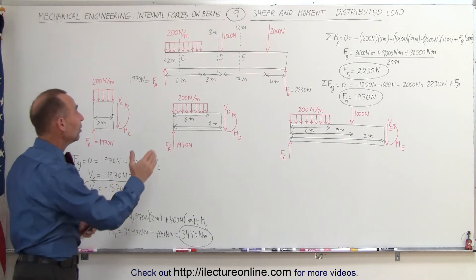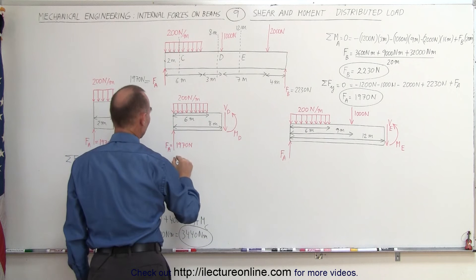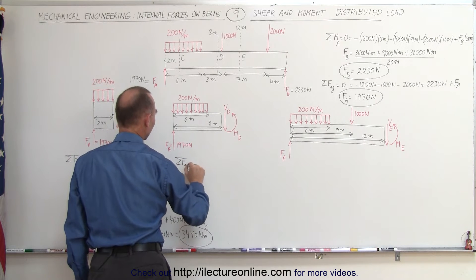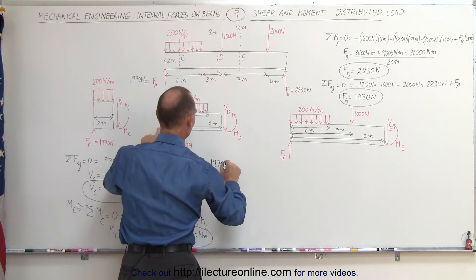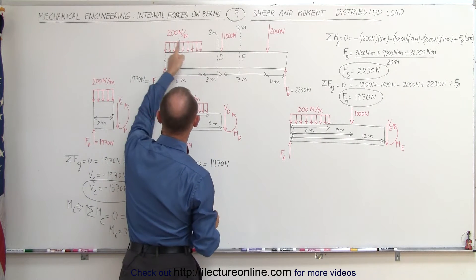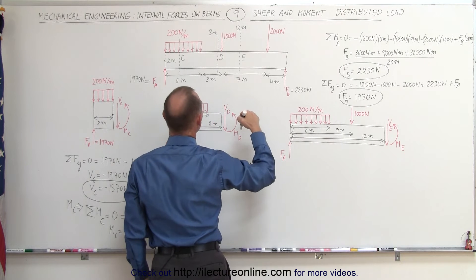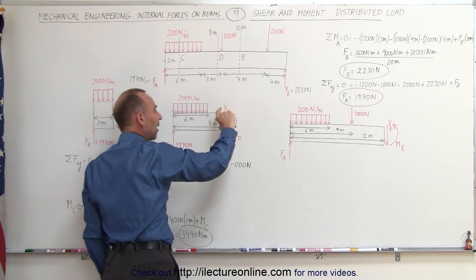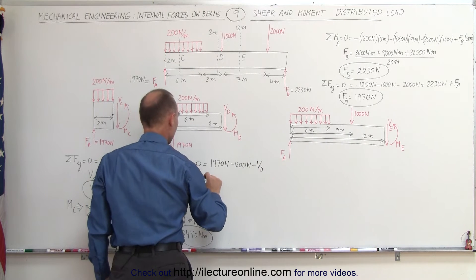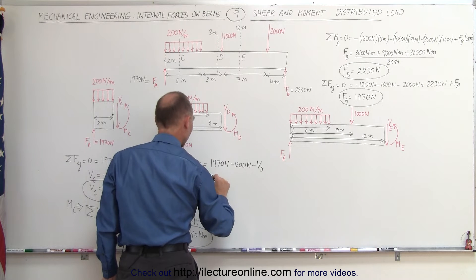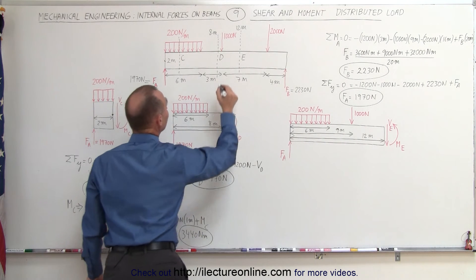Now let's find the shear force and moment for the section out to D, which includes the entire distributed load. Summing forces in the y direction: we have force at A, positive 1970 N, minus the total distributed load of 200 N/m times 6 meters = minus 1200 N, minus V at D. Solving for V at D gives 1970 minus 1200, which equals 770 N.